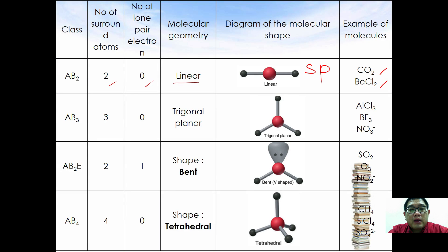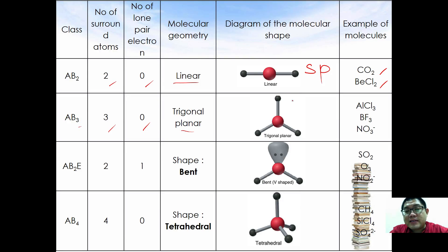Next, AB3 indicates three surrounding atoms and no lone pair electrons, so the molecular geometry is trigonal planar. Examples are AlCl3, BF3, and NO3-. AB3 corresponds to sp2 hybridization.